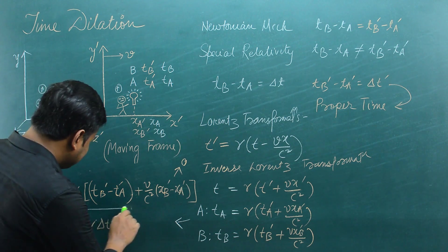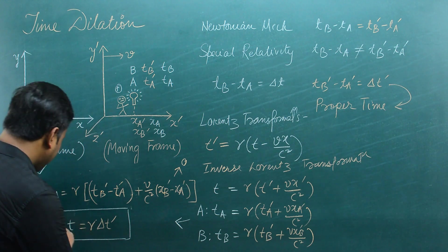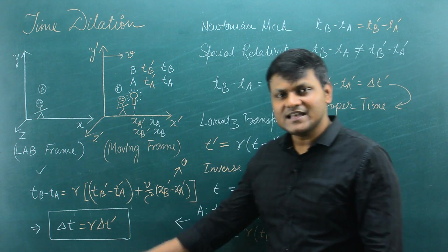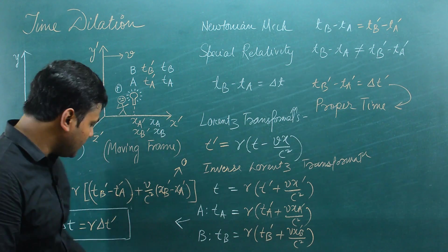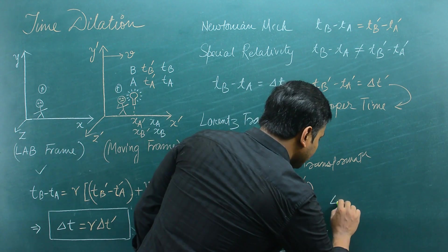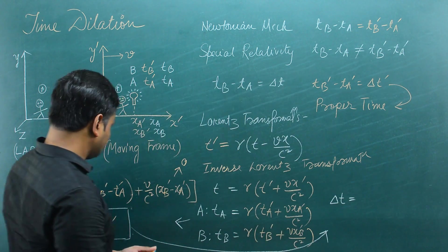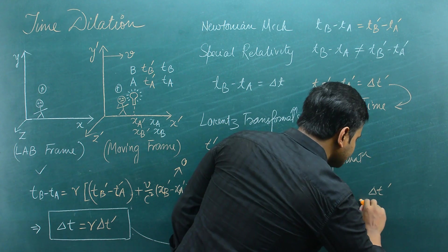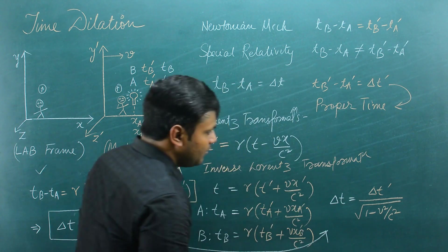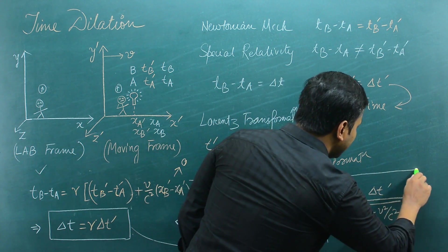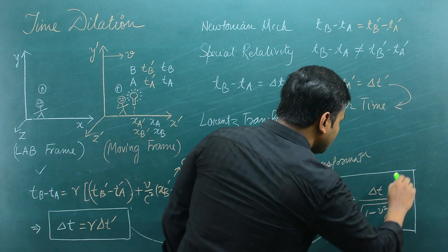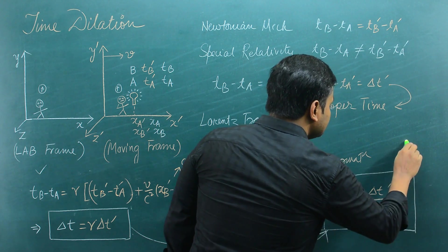This is the relationship between the time periods measured by both observers in relative motion. Gamma is the factor 1 upon root over 1 minus V squared upon C squared. So we can write this as: delta T equals delta T' divided by root over (1 minus V squared upon C squared). This is the time dilation formula.